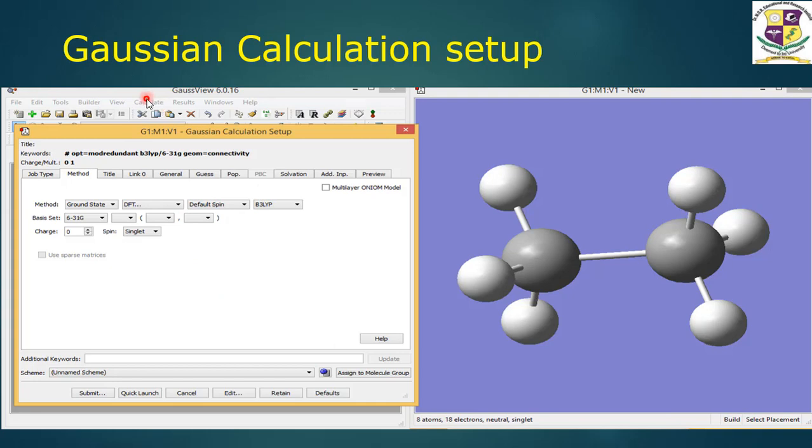Once it is selected and given ok, we will move on to calculate. In the toolbar there is an icon called calculate. Click this icon calculate, you will get Gaussian calculation setup. Click Gaussian calculation setup and you will get a window like this. In this we will go for the method - we can select density functional theory. As the aim of this experiment is to study the potential energy surface through DFT, I have selected DFT.